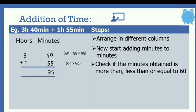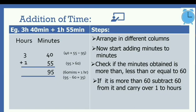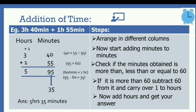Since 95 is greater than 60, it means 95 minutes has passed an hour. So we subtract 60 from it and carry 1 over to the hours column. 95 minus 60 gives us 35. So 95 minutes is actually 1 hour 35 minutes — 35 minutes remains in the minutes column and that 1 hour gets added to the hours column. After adding the hours, we get 5. So the final answer is 5 hours 35 minutes.